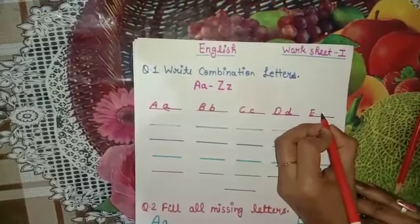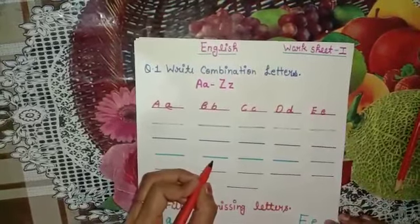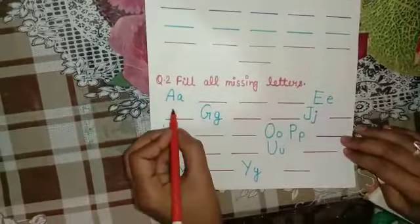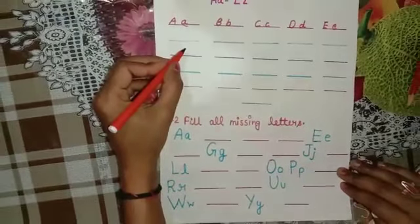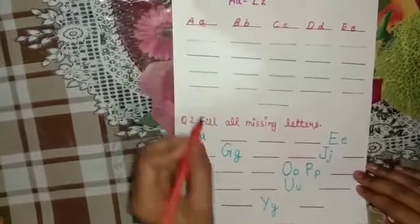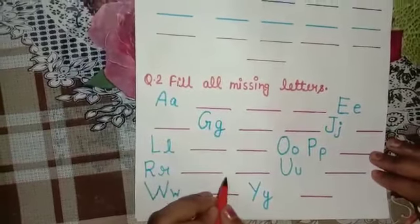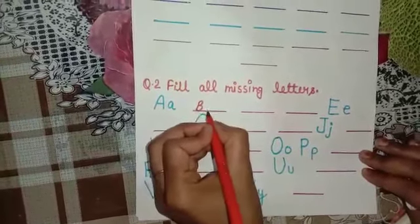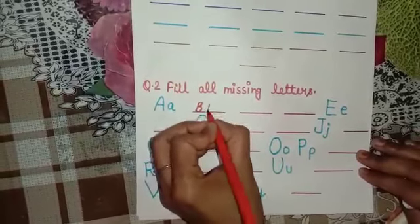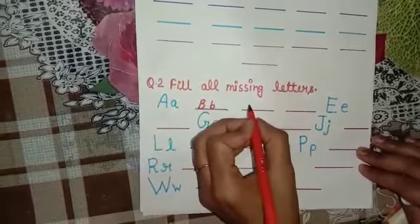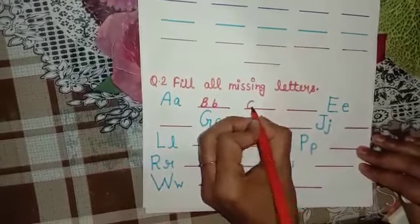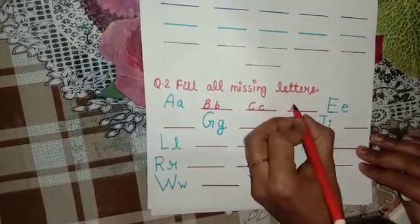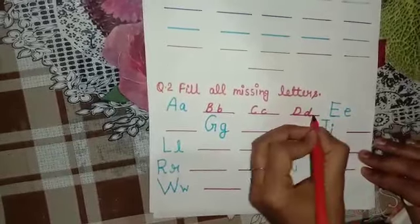E capital small e, this way you have to complete the exercise. So next question, fill all missing letters. First I told you this, this way you have to do the same. Now this way you have to fill all missing letters: A capital B, then A B then C then small C, A B C D capital D small D. This way you have to complete.